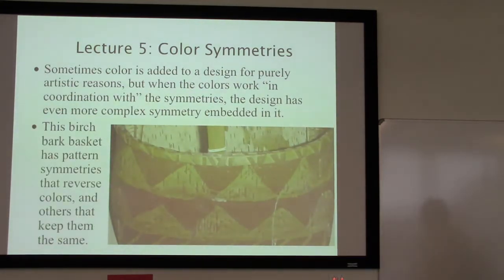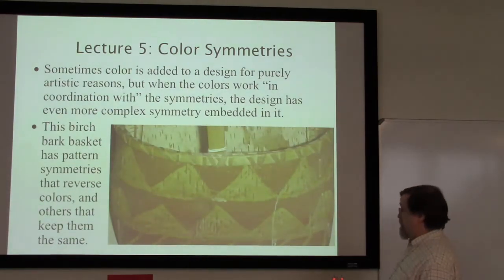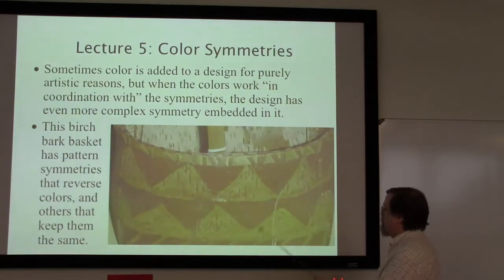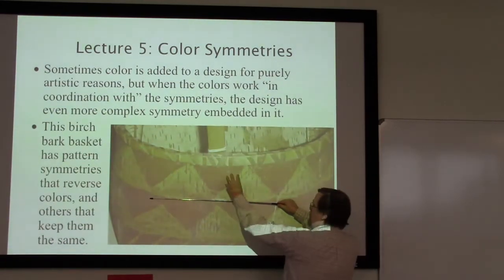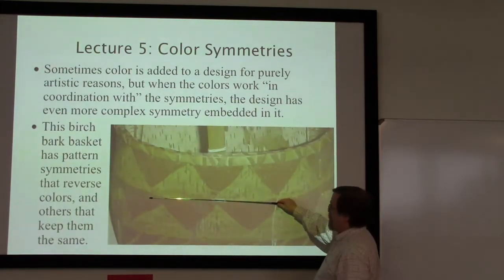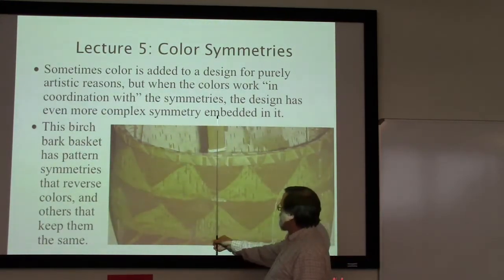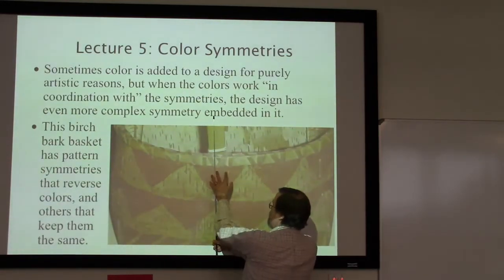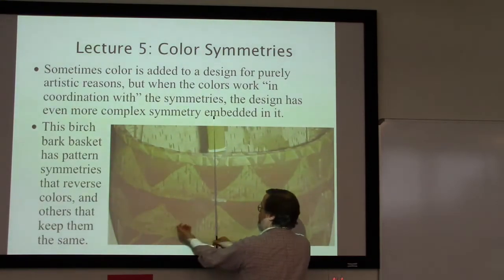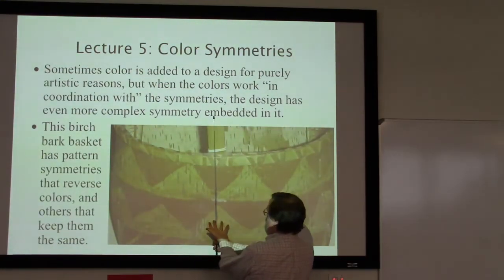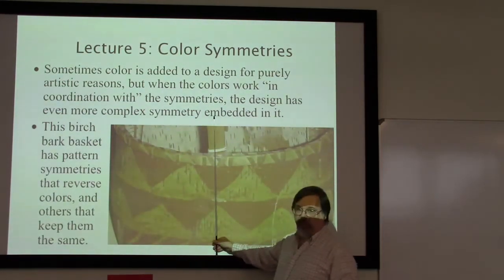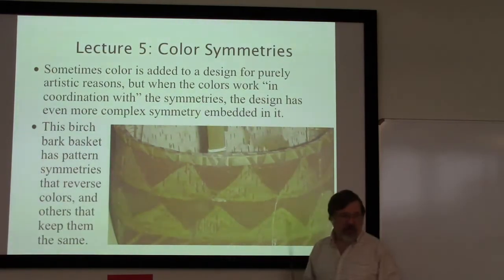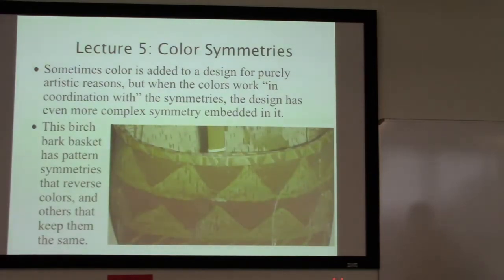This birch bark basket is an example where the colors are working in coordination with the symmetries. If I look at the horizontal reflection symmetry, all of the colors get reversed — the light brown goes to the dark brown and dark brown goes to the light brown. If I look at the vertical reflection symmetry, all of the colors are preserved. This is an example of the sort of thing we're going to be looking for.